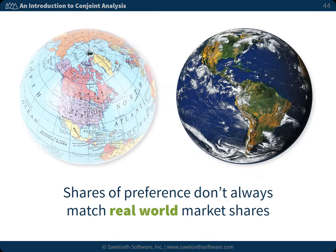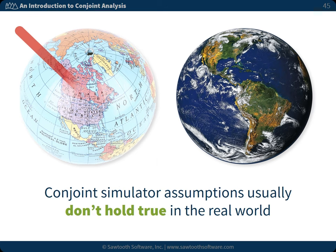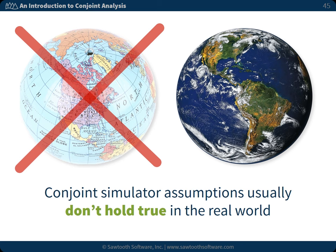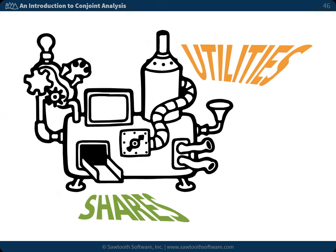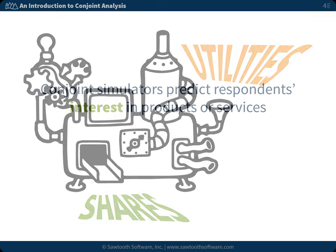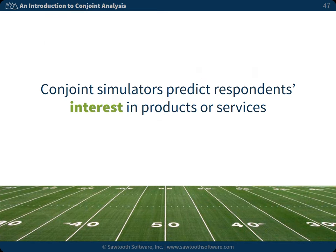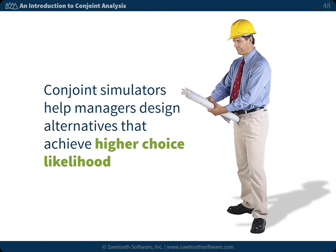Because these assumptions are often violated, shares of preference from conjoint simulators don't always match real-world market shares. In fact, all the conjoint simulator assumptions usually don't hold true in the real world. But this doesn't mean that conjoint simulators are not valuable. Simulators turn esoteric utilities into concrete shares of choice among competitive offerings that sum to 100% and are easy for decision-makers to understand. Assuming a level playing field, conjoint simulators predict respondents' interests in products or services. The results help managers understand people's preferences and design alternatives that achieve higher choice likelihood.